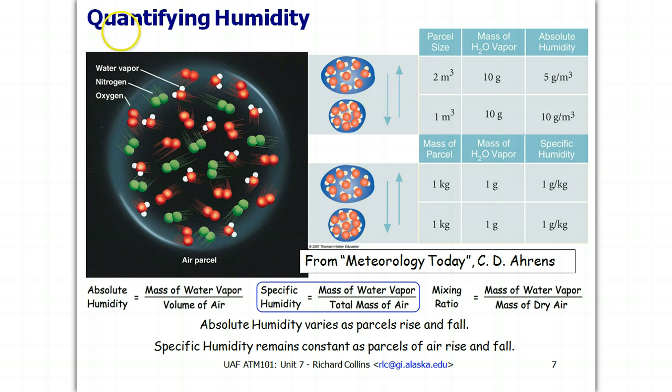We quantify humidity by the mass of water vapor divided by the volume of air, absolute humidity. This is the classic definition of concentration from physics and chemistry, mass divided by volume, related to our concept of density, the amount of stuff in a given volume. We also can, in meteorology though, use specific humidity which is the mass of water vapor to the total mass of air, the air plus the water. Or we can use mixing ratio, the mass of water vapor to the mass of dry air.